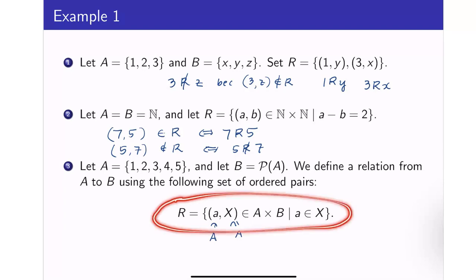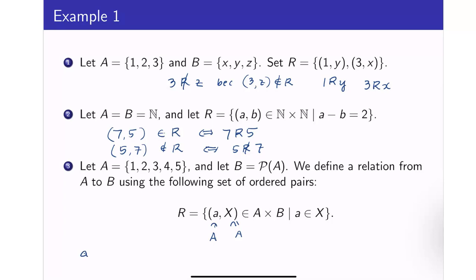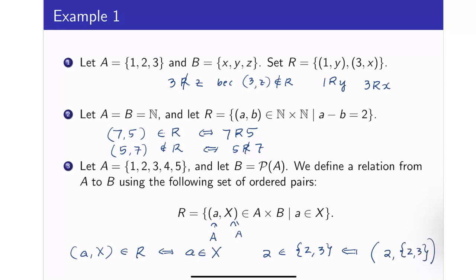We can write this as: (A, X) is in R if and only if A is an element of X. So for example, 2 is an element of the set {2, 3}, so therefore the ordered pair (2, {2, 3}) is in R — or we say that 2 is related to the set {2, 3}. They will be related if the first number here is an element of the subset.